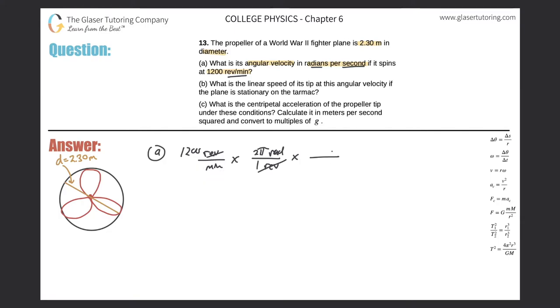Then I have radians, so now I've got to get rid of minutes. They will go on the top because I have to cancel them. I need seconds, so I put them on the bottom - 60 seconds in a minute. So it's going to be 1200 times 2π divided by 60, and we get a value of 126 radians per second.